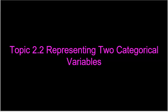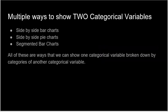When you collect categorical variables, you're collecting words, and you need to somehow organize a mass of words. There are multiple ways to show two categorical variables. We can do side-by-side bar charts, side-by-side pie charts, or segmented bar graphs — which are really beneficial but kind of tricky to make. All of these show one categorical variable broken down by categories of another categorical variable.